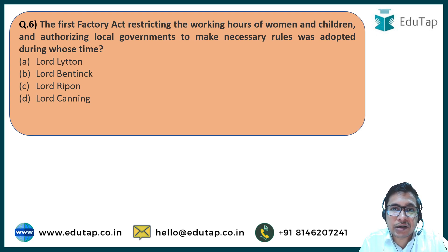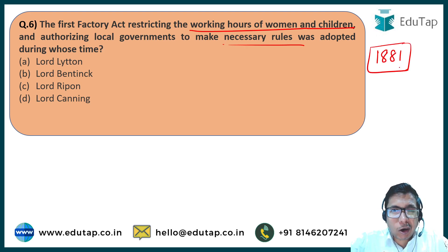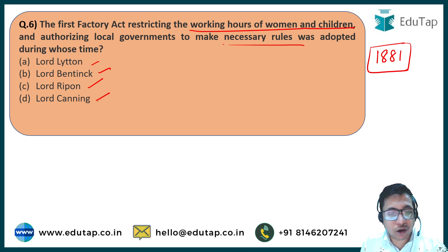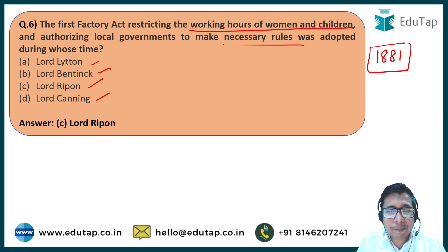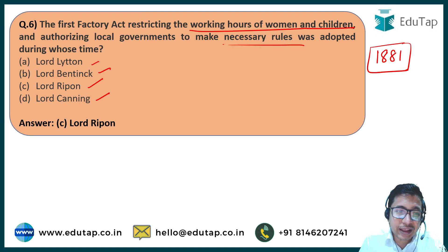Question number six: The first Factory Act was passed by the British, restricting working hours of women and children and authorizing local governments to make necessary rules. During whose tenure was it enacted? The options are Lord Lytton, Lord Bentinck, Lord Ripon, and Lord Canning. The correct answer is option C — Lord Ripon. The first Factory Act was passed in 1881. Lord Ripon was one of the few Viceroys sympathetic to Indians and responsible for most positive reforms of that era.